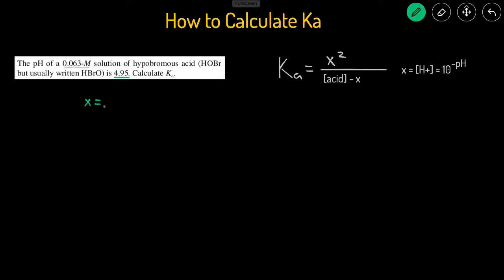We'll first start by solving for x. So x is going to equal 10 raised to the power of the negative pH. Our pH is 4.95, so negative 4.95. And now that we have x, let's plug it into the Ka expression.